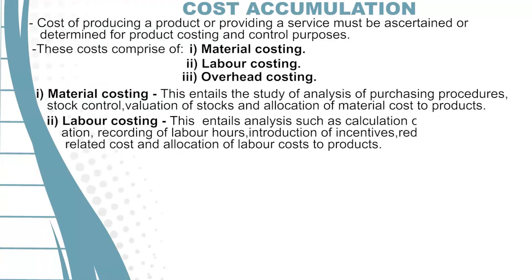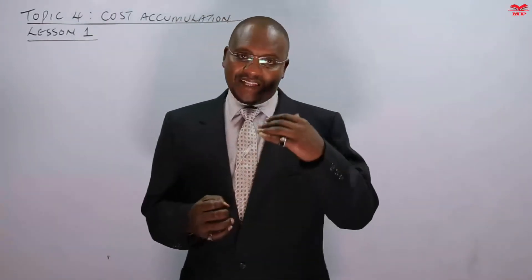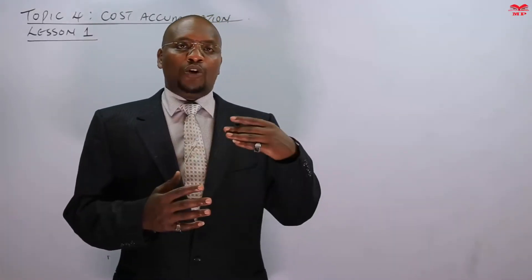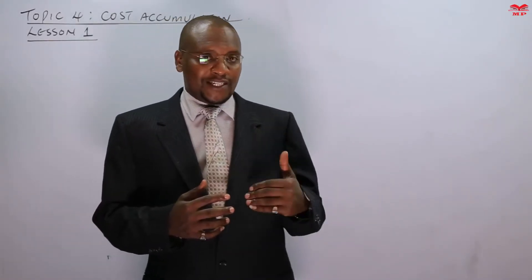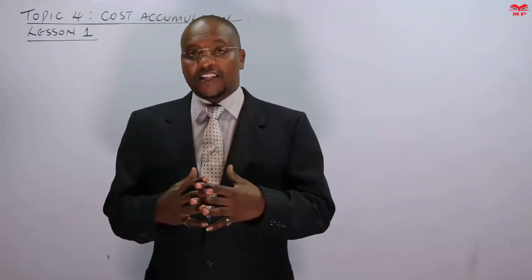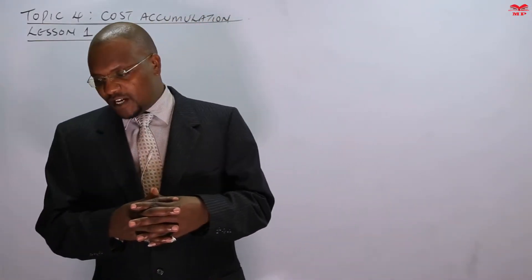Labor costing entails analysis such as calculation of labor remuneration, recording of labor hours, introduction of incentives, introduction of labor-related costs, and allocation of labor cost to products. It's an entire process starting from how we collect data concerning the laborers — for example, the labor hours and the units produced by these laborers — whether the basis of paying them is units produced or the time they have worked, including incentives and other labor-related costs.